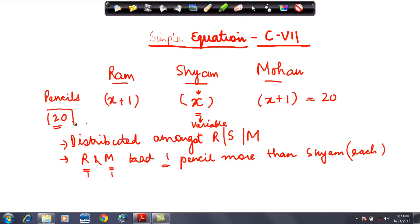So what do I know? I know that the sum of all these three is equal to 20. Why? Because 20 were the number of pencils which were distributed between the three of them. So whatever is the number of pencils which is available with Ram, whatever be the number with Sham, whatever be the number with Mohan, the sum of all these three pencils is equal to 20.